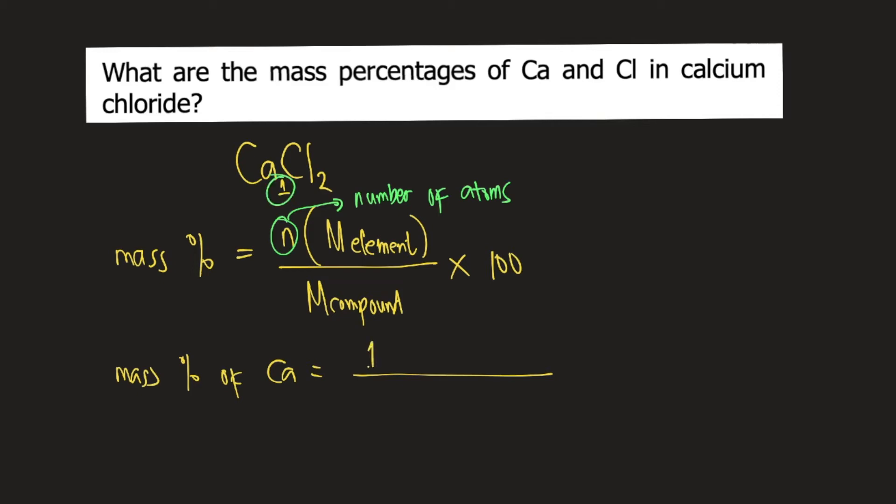So 1 times the molar mass of calcium in the periodic table is 40.08 grams per mole divided by the molar mass of the compound.